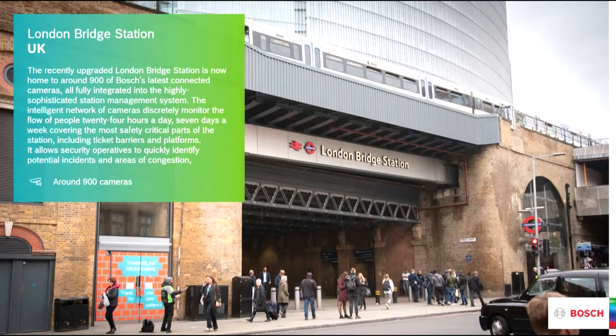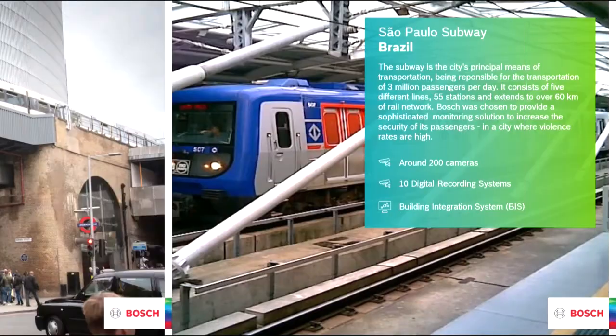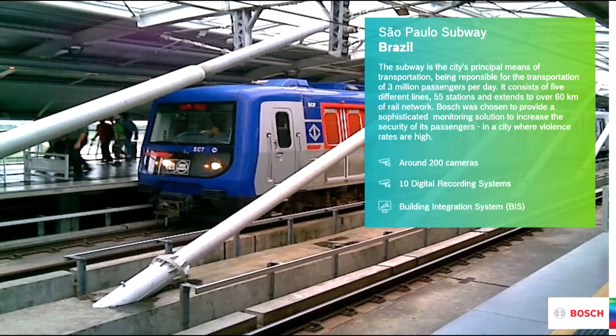The system provides maximum coverage and flexibility. Our solution is a scalable security network covering the most safety-critical parts of the station like ticket barriers, turnstiles, and platforms, with an intelligent network of IP cameras discreetly monitoring the flow of people and passengers on a 24/7 basis.